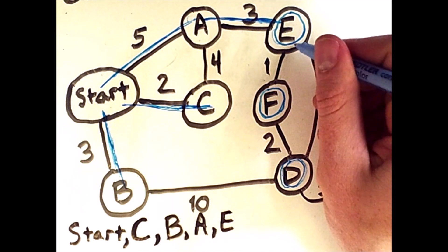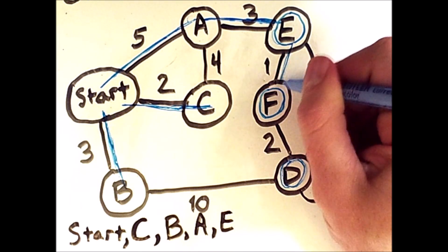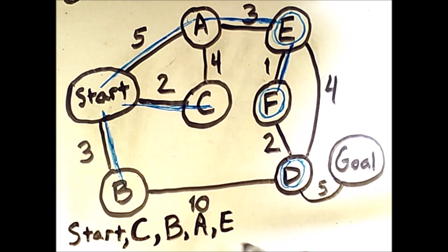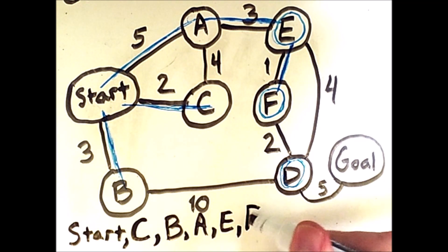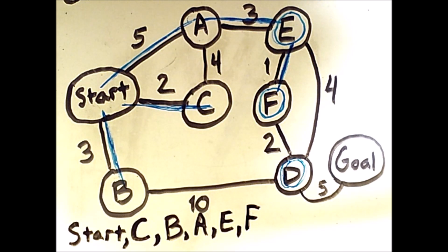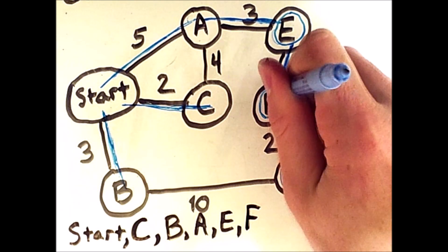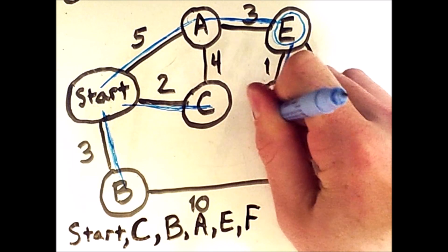Therefore, the next stop in our search is to go to F from E. So we will add F to the list of searched states. It is no longer on the fringe. And so at this point, the only state on the fringe is D.